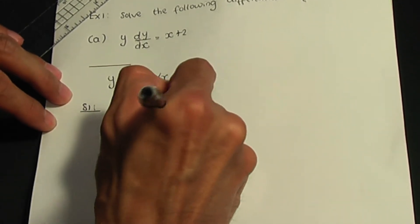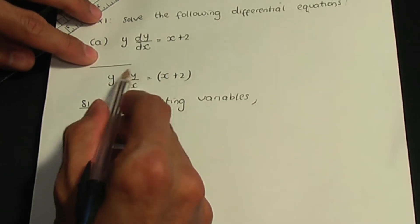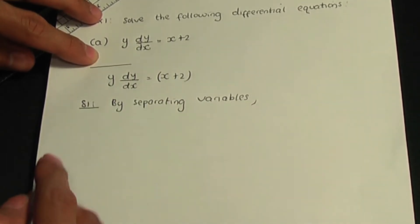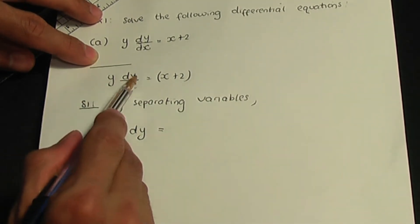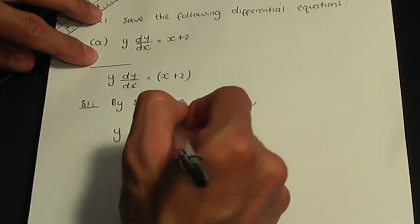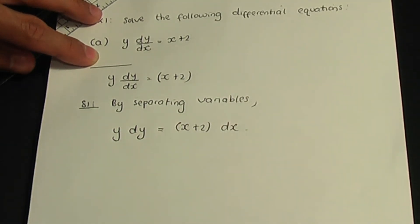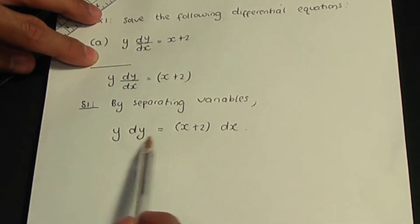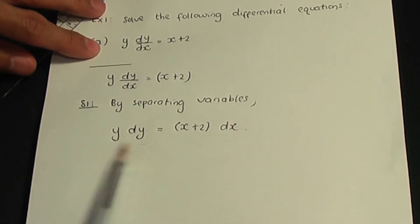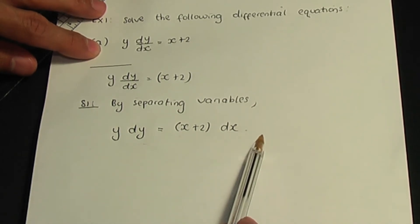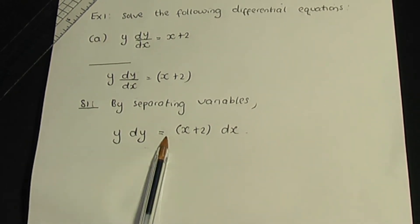Separating variables: regard dy/dx as a fraction. I'm going to keep y and dy on the left-hand side of the equation, and keep (x + 2) as well as dx on the right-hand side. So y dy = (x + 2) dx. Keep y and dy terms on one side and x and dx terms on the other side — it doesn't matter which side as long as they're separated.